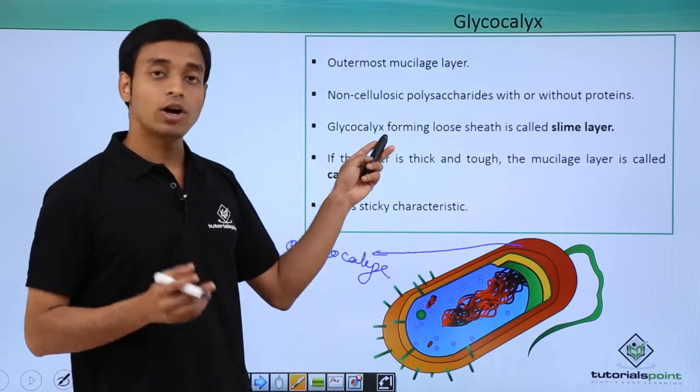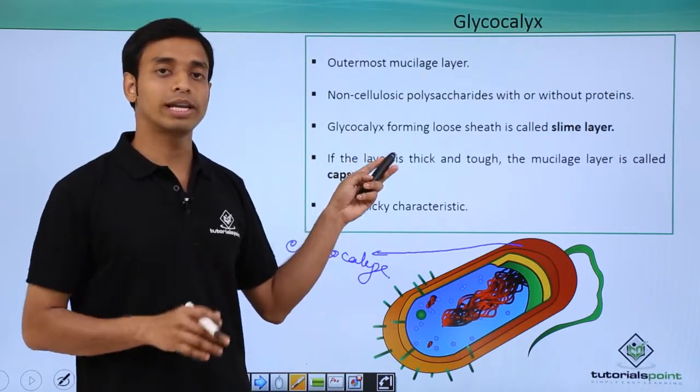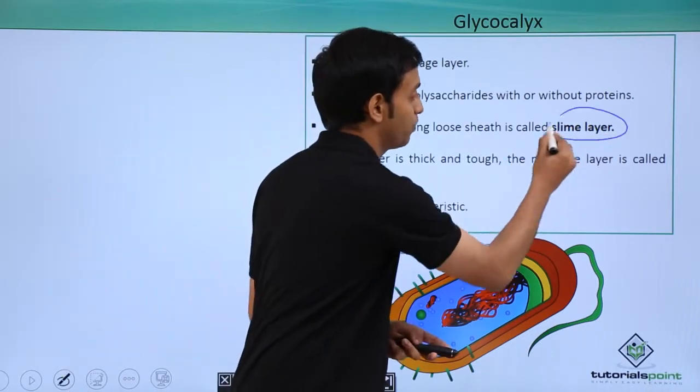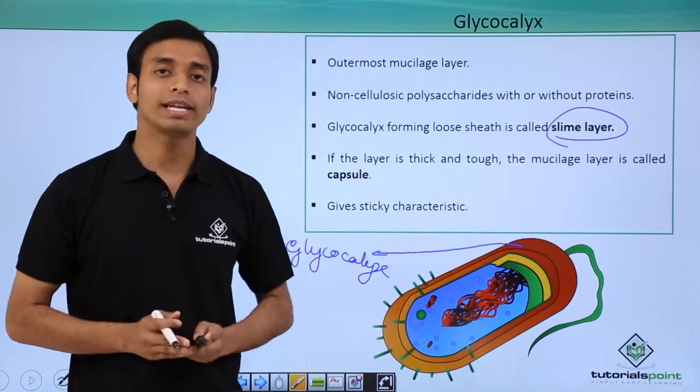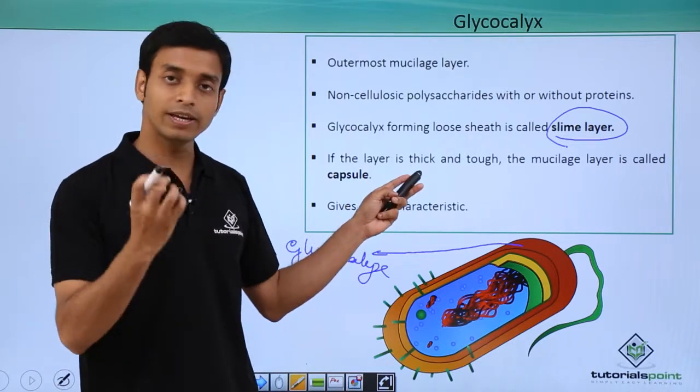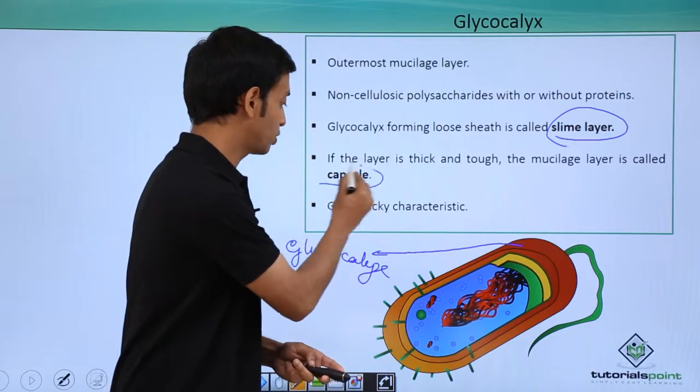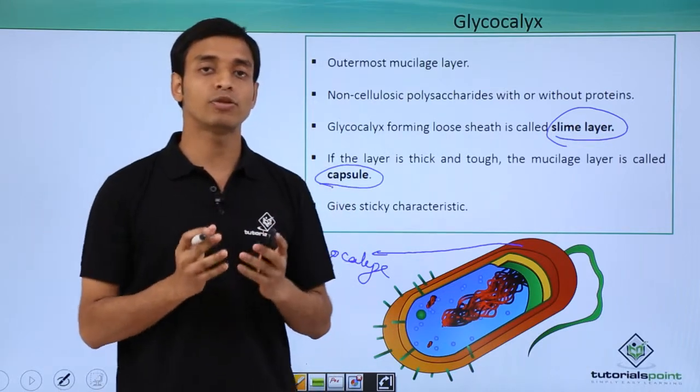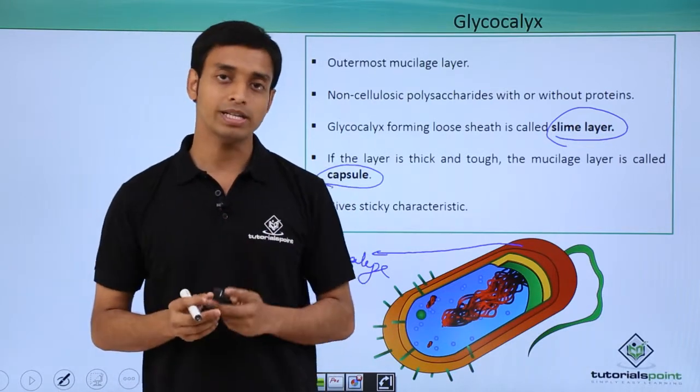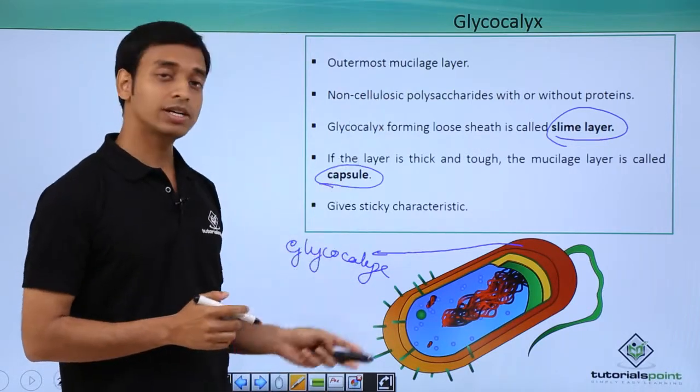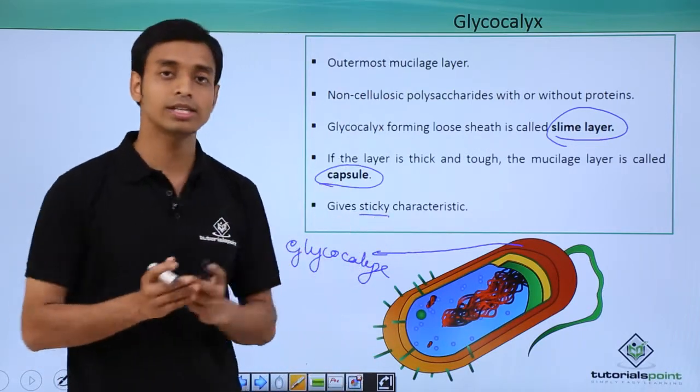Now glycocalyx, if these layers of glycocalyx are present in the form of loose sheath, they are known as slime layers. Whereas if glycocalyx is present as very thick, tough mucilage layer, then they are known as capsules. So capsules are very important in providing protection to the bacterial cells. Also importantly, glycocalyx gives a sticky appearance to these cells.